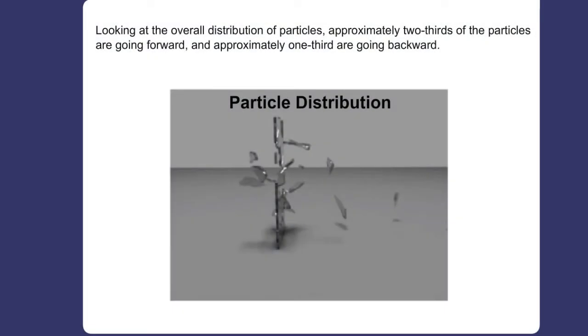Looking at the overall distribution of particles, approximately two-thirds of the particles are going forward, and approximately one-third are going backward.